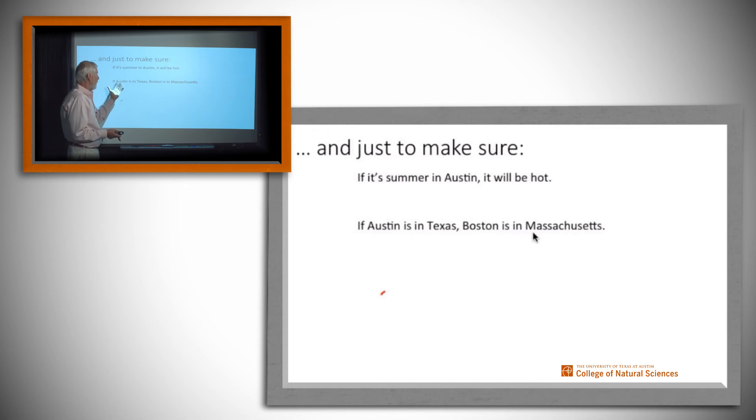If Austin is in Texas, Boston is in Massachusetts. Again, true and true. Notice there is no causality right here. No one believes that Boston is in Massachusetts because Austin is in Texas, and we don't care for the logical notion of implication. If both of these parts are true, the implication is true.